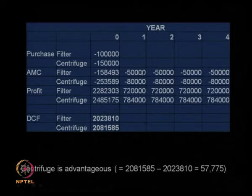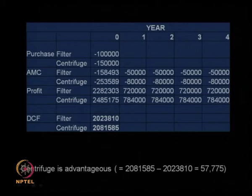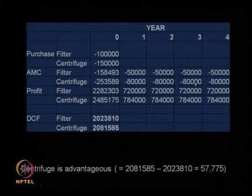The actual net present value for the filter AMC is only 1,58,493, because the value of money in future years is less than what you hold today. For the centrifuge, the AMC is 80,000 every year. Calculating the net present value by dividing 80,000 by 1.1, then 1.1 squared, 1.1 cubed, and 1.1 to the fourth power and adding them all up gives 2 lakhs 53,589 — not exactly 3 lakhs 20,000 as a simple multiplication would give.